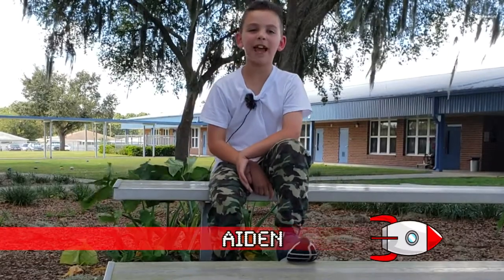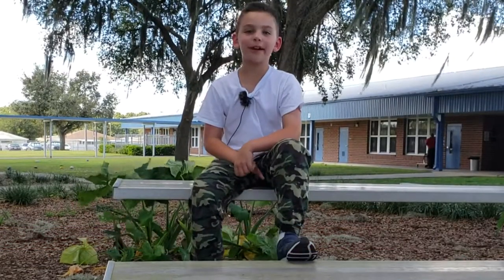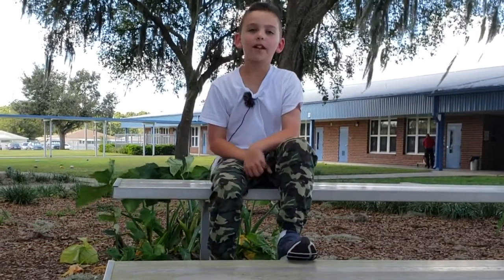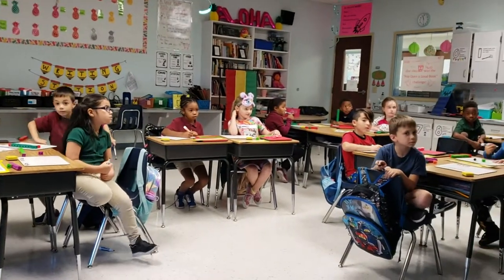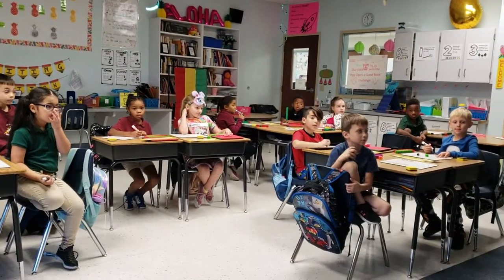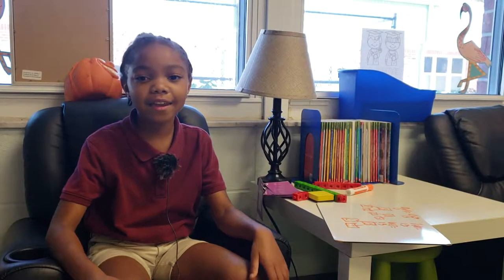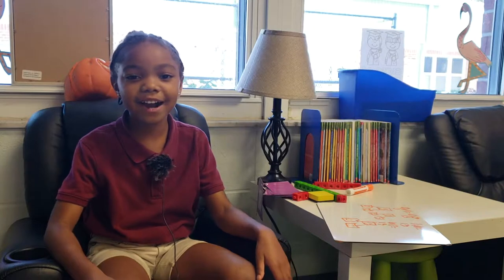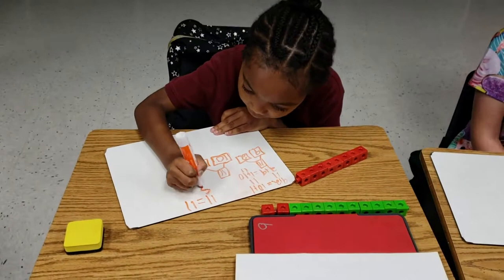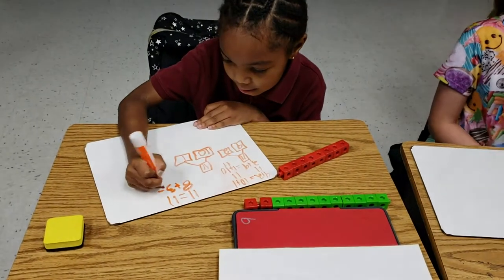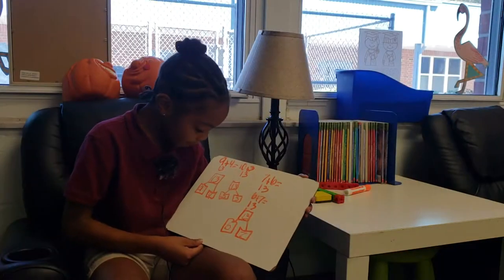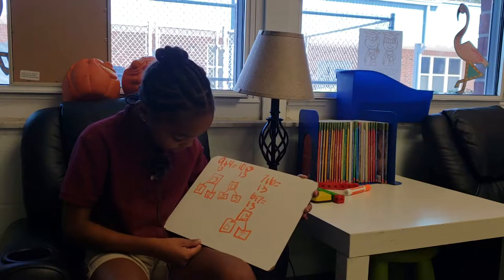Hi Rockets, my name is Aiden. Today we're going to see what Meshukah is doing. We are making 10 to add on. Hey guys, my name is Amaria, and this is what I did on my board. 9 plus 4 equals 10 plus 3, which equals 13. My number sentence is 13 and 9.